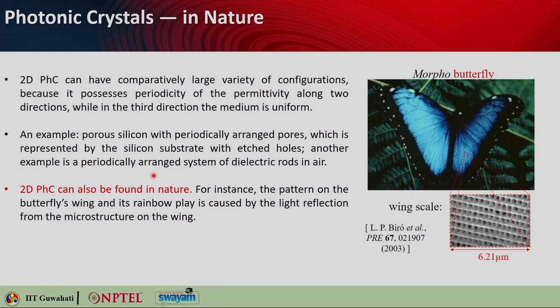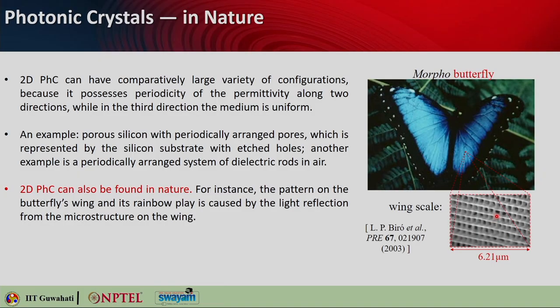2D periodic crystals are also found in nature. If you take the Morpho butterfly's wing under a microscope, you will see it actually has a 2D periodic lattice — holes in both X and Y directions, a 2D periodic variation. Why does this color look blue? When white light falls on this 2D photonic crystal, it has a band gap lying in the blue frequency range — meaning blue color is not allowed to pass through it. So the blue color gets all reflected, and you can look from any direction but the blue color will come back to your eyes — that is why it looks blue.